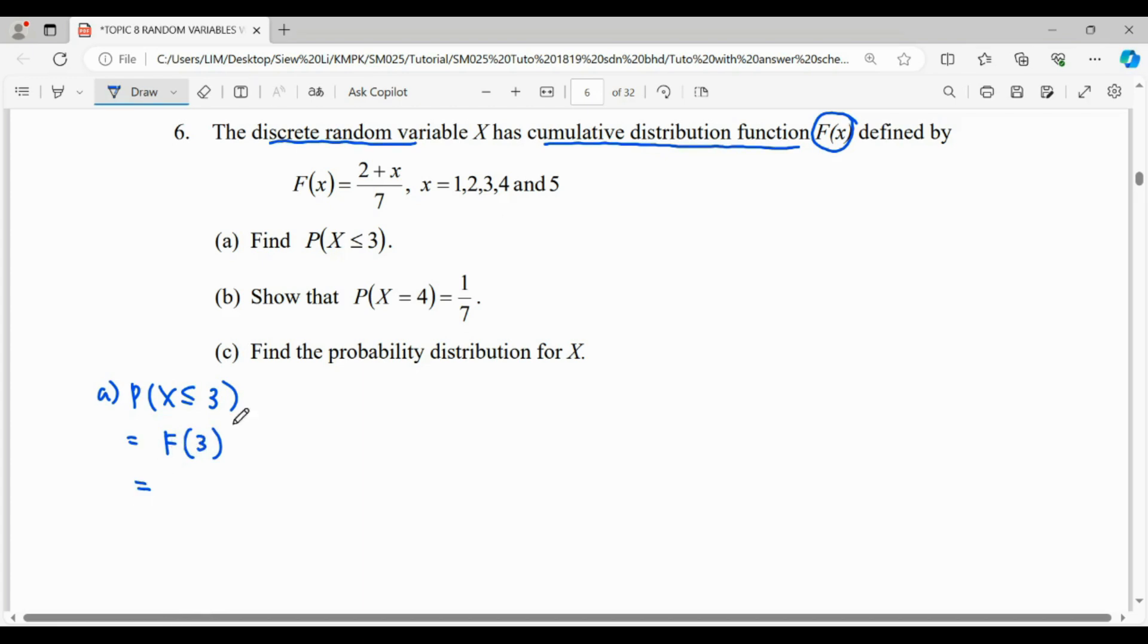So F(3), we're going to substitute 3 inside the formula here. It will be (2 + 3)/7. The probability will be 5/7.